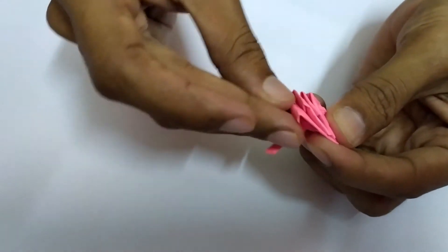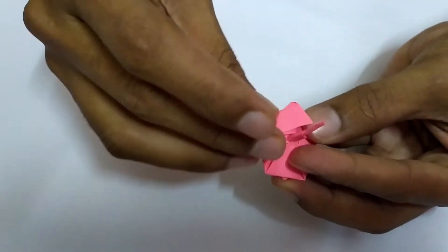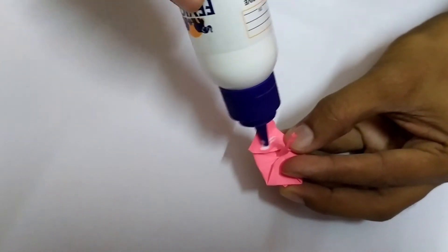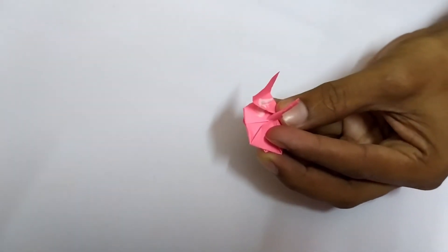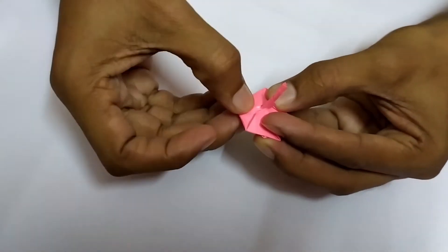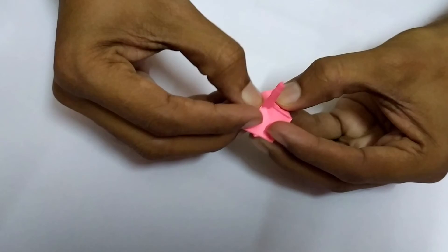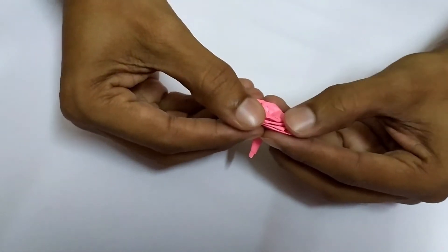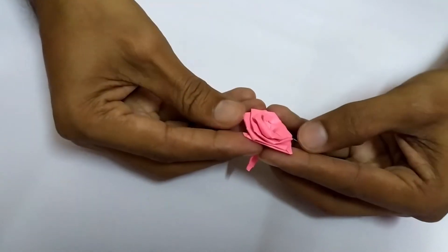At the end, you fold it back like this and then apply glue over here. Take the glue, apply here and then stick it. Hold it for a while and stick it properly, then adjust your rose like this.